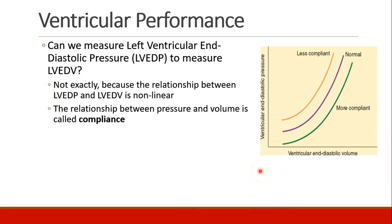How do we measure left ventricular end diastolic volume if we want to know a patient's preload? We could use an echocardiogram or imaging to take a picture, but that's not always available. So maybe we could measure left ventricular end diastolic pressure, since pressure and volume are usually related. Maybe we could put a probe inside the left ventricle. However, it turns out you can't exactly do that, because the relationship between pressure and volume isn't totally linear — and that concept is called compliance.